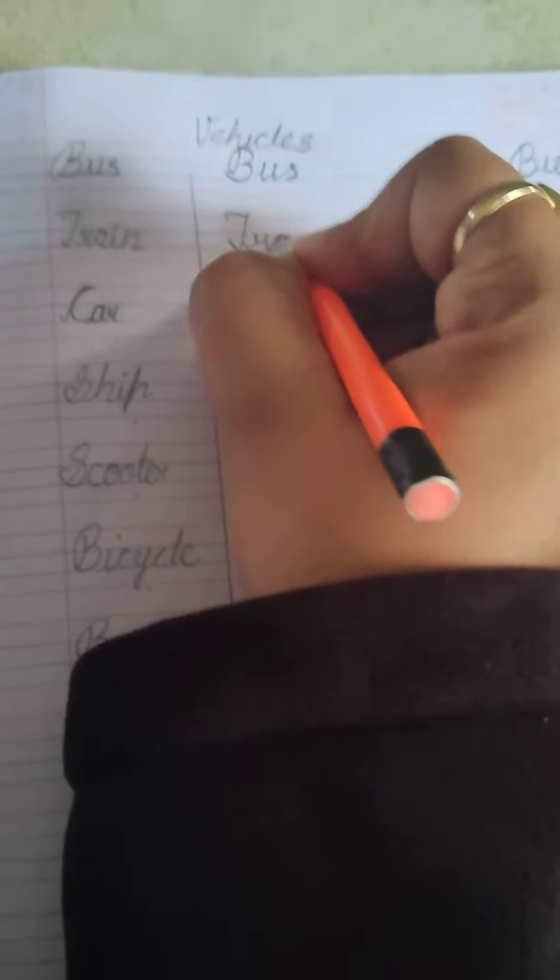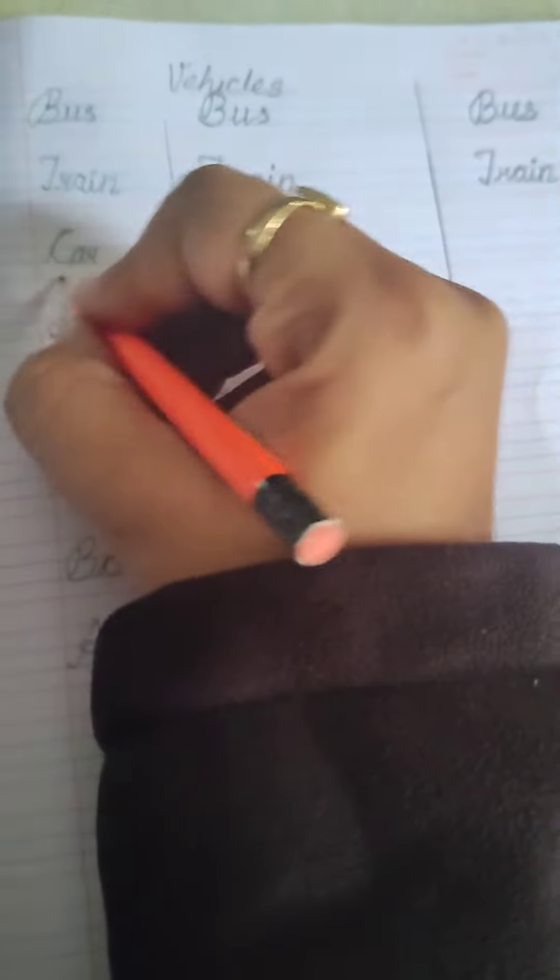What is the spelling of TRAIN? T-R-A-I-N, TRAIN. This is CAR.